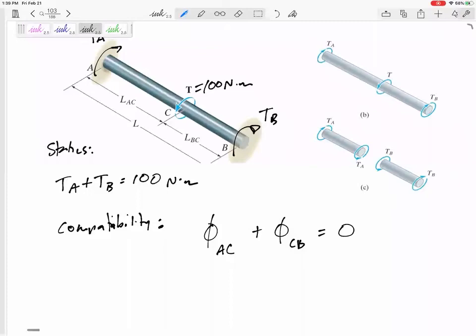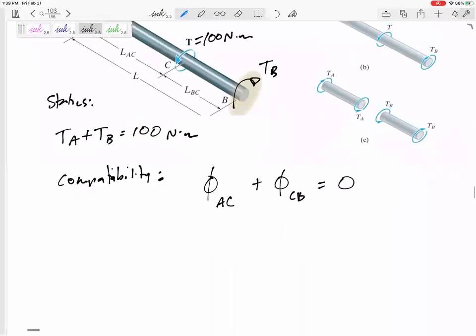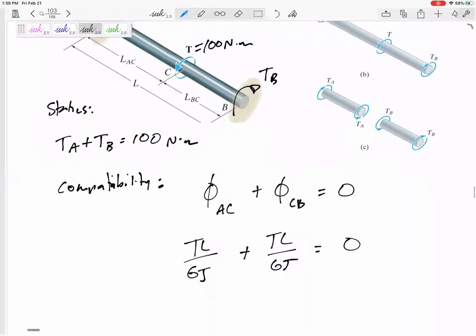So same idea. Statics doesn't give us enough. I need a compatibility. So just ask yourself, what can I say about the angles of twist of each of these sections? So in this section, it would add up to zero. So the T-L over G-J of that section plus the T-L over G-J of that section would equal zero.